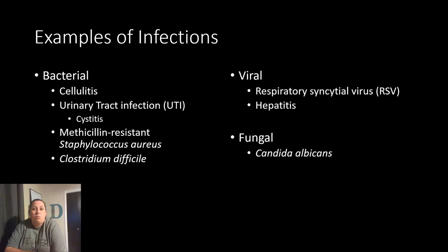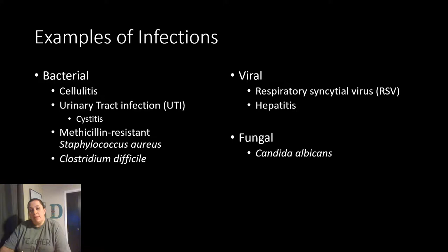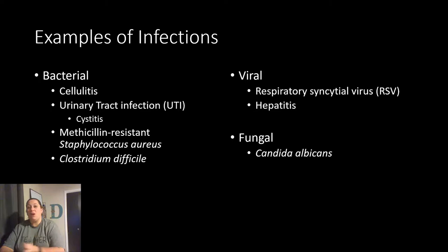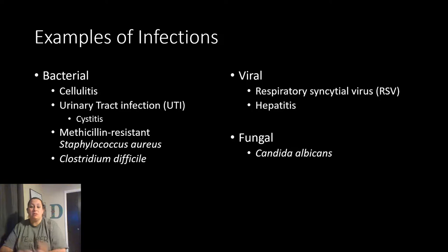Fungal infections include ringworm — which is not a worm but a fungal infection — athlete's foot, and vaginitis. Candida albicans can cause yeast infections in the vagina causing inflammation. If this fungus takes place in the mouth area, it is called thrush. Kids often develop thrush from exploring the world with their hands and putting things in their mouth. In adults, thrush mainly occurs in immunocompromised individuals, such as those receiving cancer treatments or with HIV.